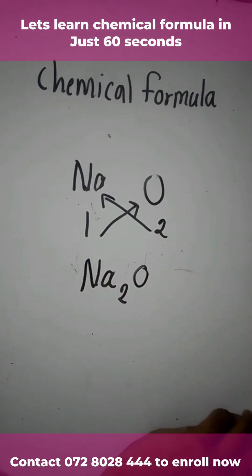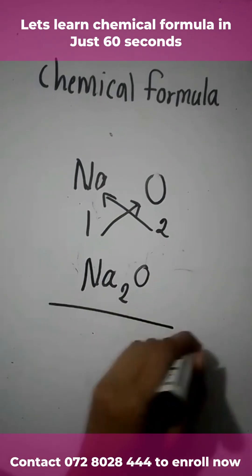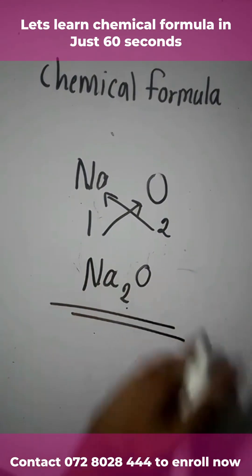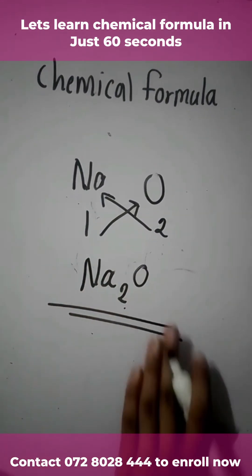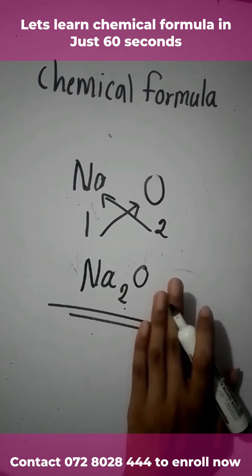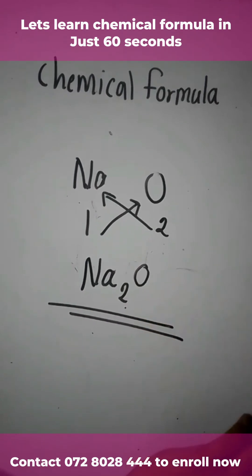You generally don't write 1 in a chemical formula, therefore you will get Na₂O. So this is the chemical formula of sodium oxide. Hope you understood, and thanks for watching.